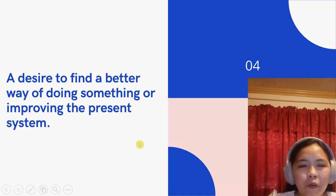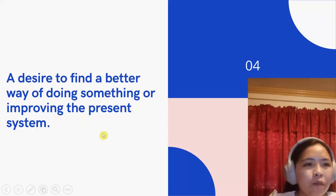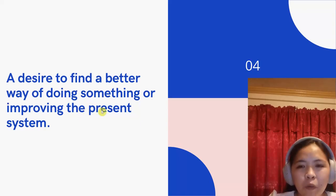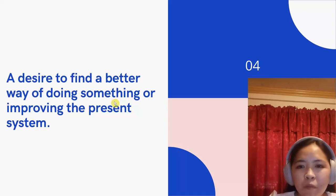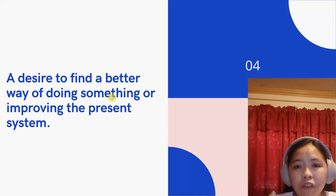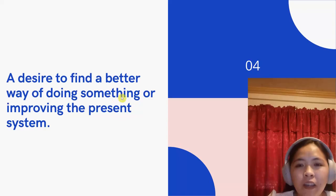Lastly, discuss your desire to find a better way of doing something or improving the present system. You will now explain the importance of your system to prospective users and how you are going to solve the current problems you have mentioned. It is important that the problems stated are problems that can be solved by developing a software. Do not mention problems that cannot be solved by your system.